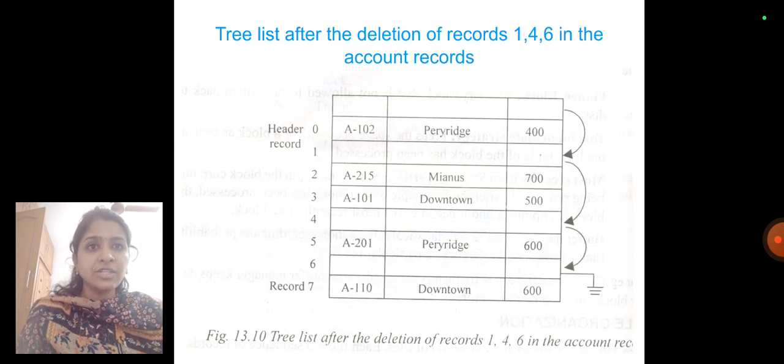Next is the free list after the deletion of records 1, 4, 6 in the account records. So there is an account in which 1, 4, and 6 has been deleted, and after that the free list will look like this.